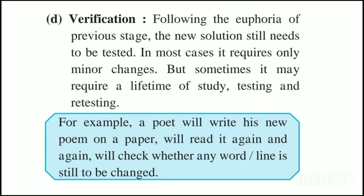The last stage of creative thinking is verification. Following the euphoria — extreme happiness — of the previous stage, the new solution still needs to be tested. In most cases it requires only minor changes, but sometimes it may require a lifetime of study and testing. For example, a poet will write his new poem on paper, read it again and again, and check whether any word or line still needs to be changed.